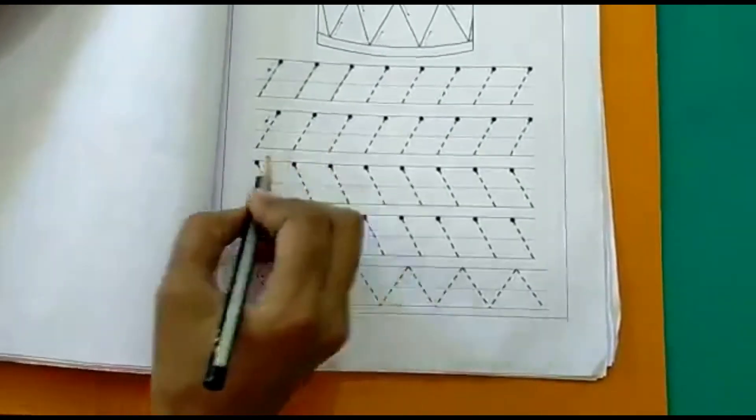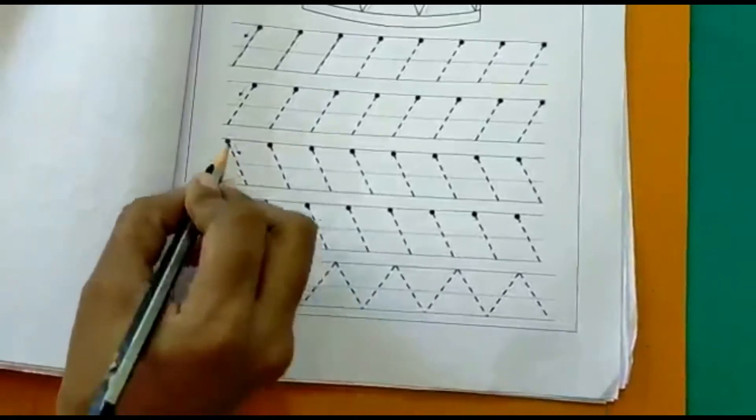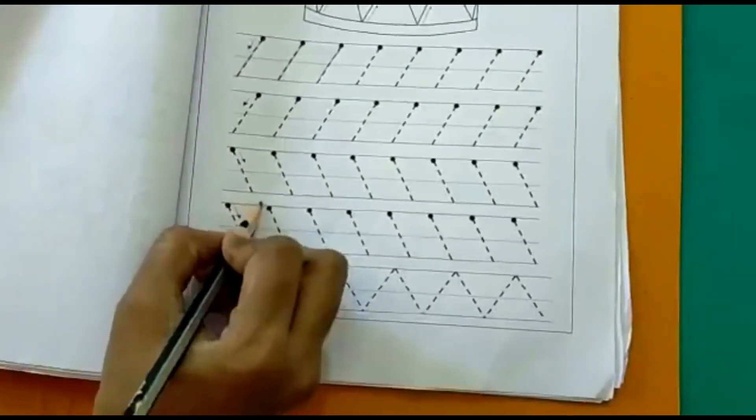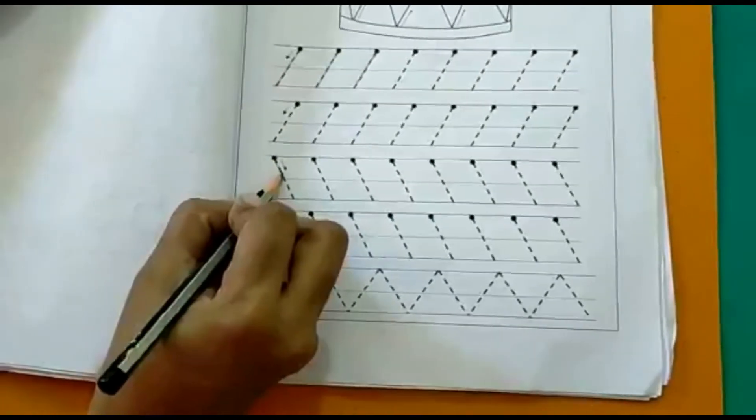Now, after this, over here if you see, we have a different kind of slanting line. This is slanting line to the right. So you have to keep your pencil on this dot and slowly come down.